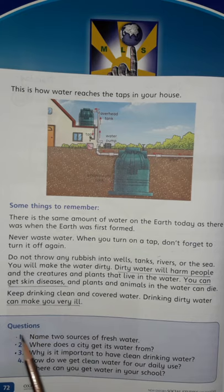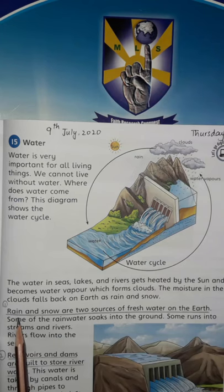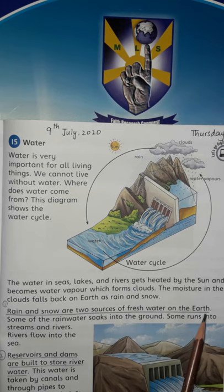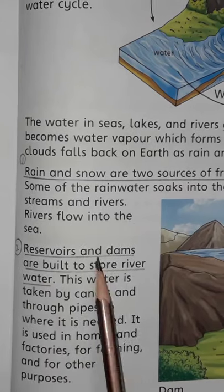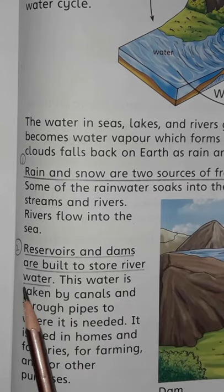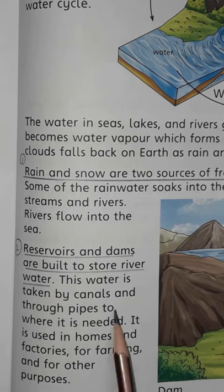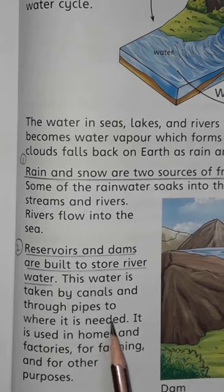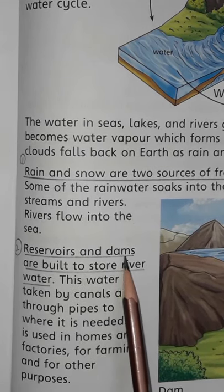Now let's discuss these questions. Question 1: Name two sources of fresh water. Rain and snow are two sources of fresh water on earth. Question 2: Where does the city get its water from? Reservoirs and dams are built to store river water. This water is taken by canals and through pipes to where it is needed. So, cities get their water from reservoirs and dams.